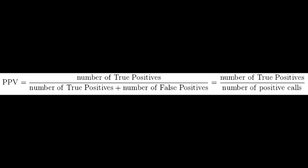Positive predictive value (PPV) is the proportion of positive test results that are true positives — the probability that the person actually has the disease given a positive test result. The equation is TP over (TP plus FP). PPV varies directly with prevalence or pretest probability; high pretest probability yields high PPV.